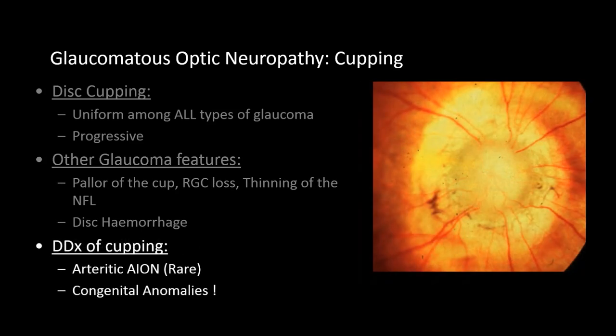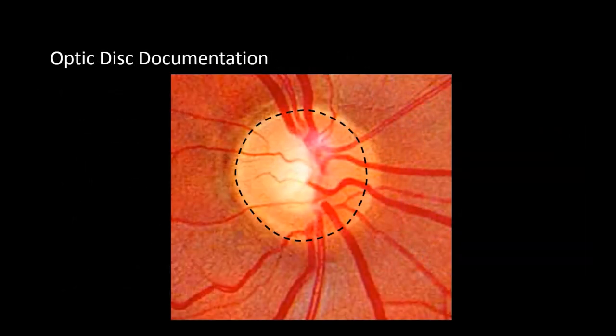Are there other causes for cupping? In rare cases of arteritic anterior ischemic optic neuropathy, there may be some cupping of the optic disc, though the clinical course is quite different from glaucoma. Some congenital optic disc anomalies may be confused with glaucomatous cupping, like optic disc coloboma or morning glory syndrome. Monitoring such patients will usually reveal their non-progressive nature. I document my optic disc findings by drawing them; it may take some time, especially at the start of your career, but it teaches you how to look for details.